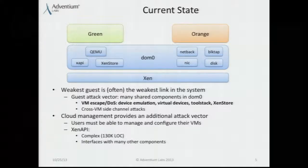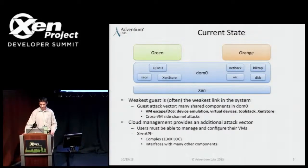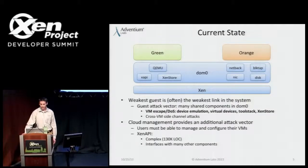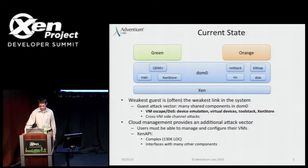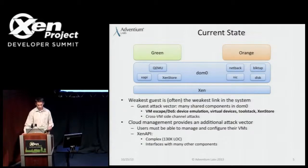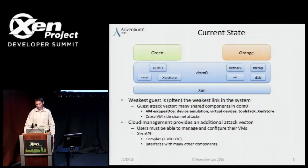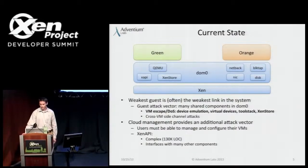This diagram shows the current state of a Xen Server-based system. For simplicity, I've illustrated a few of the major components in Dom Zero: QEMU, Xapi, XenStore, the backend drivers, device drivers, and so on. We have two guests sharing the system. The weakest guest is, in my opinion, the weakest link in the system. Once an attacker has a foothold on one of those systems — whether the tenant was malicious or has been compromised — that VM can be used as a springboard to attack the confidentiality, integrity, or availability of other tenants.